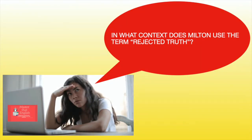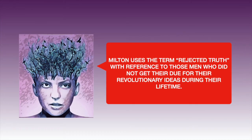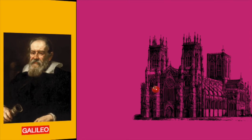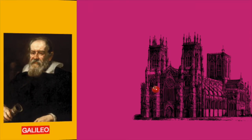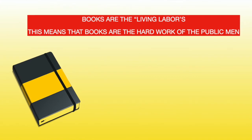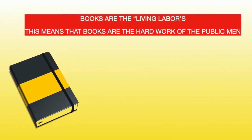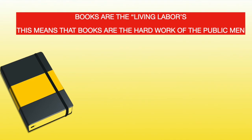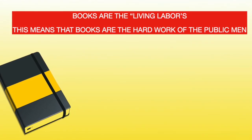In what context does Milton use the term 'rejected truth'? It refers to those men who did not receive their due for their revolutionary ideas during their lifetime. One famous example was Milton's contemporary, the Italian astronomer also called the father of modern science, whose revolutionary ideas got him into great trouble with the church. This is why Milton says that books are the living labours of public men — their ideas continue to live even after they are gone.